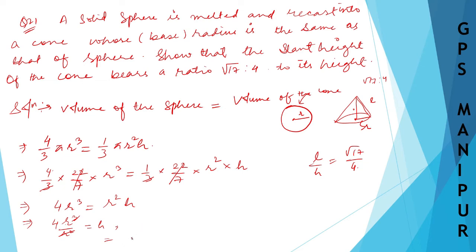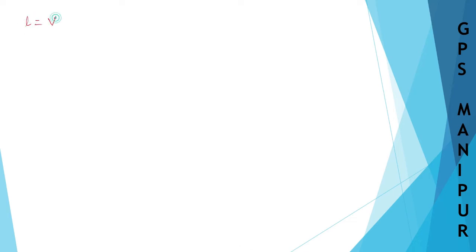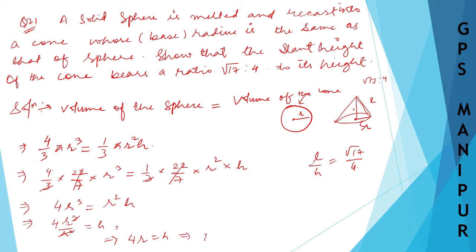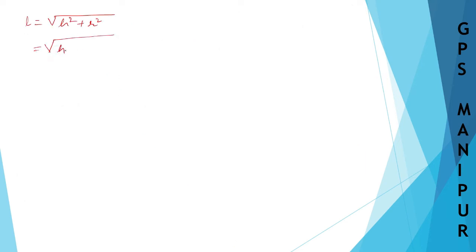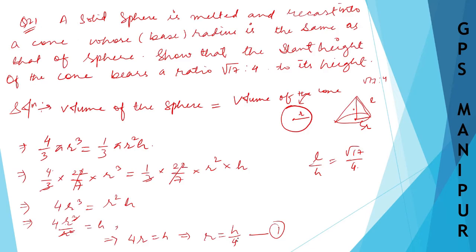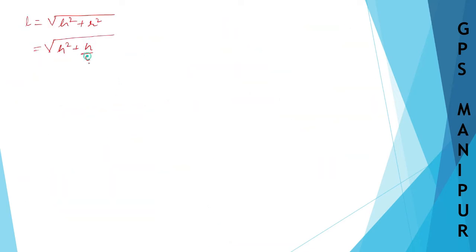Now I need to find the slant height. The formula for slant height is l = √(h² + r²). From equation 1, 4r = h, so r = h/4. Substituting r = h/4 into the formula: l = √(h² + (h/4)²) = √(h² + h²/16).